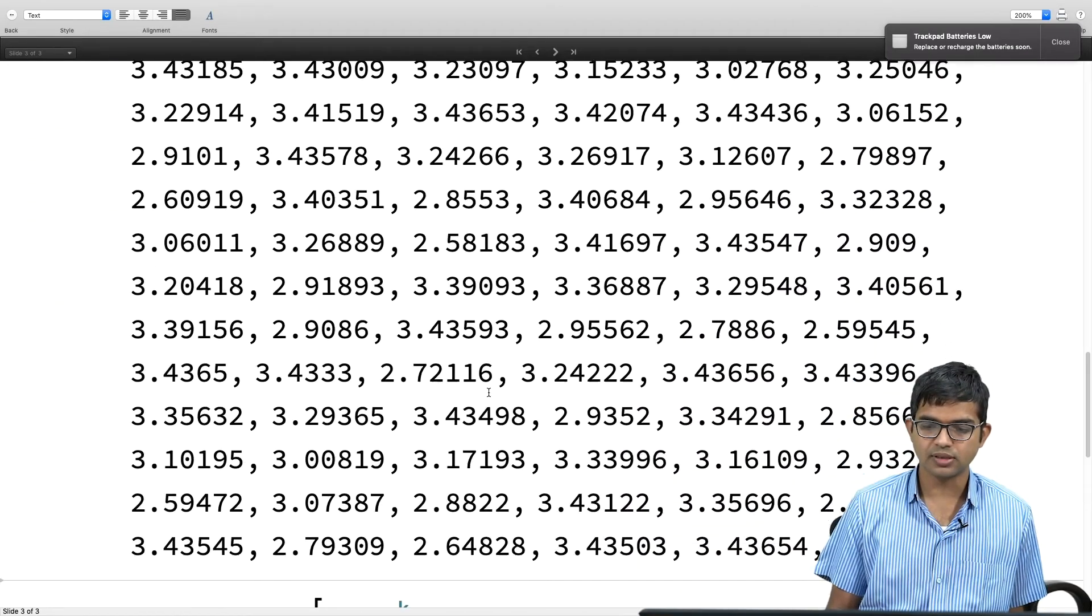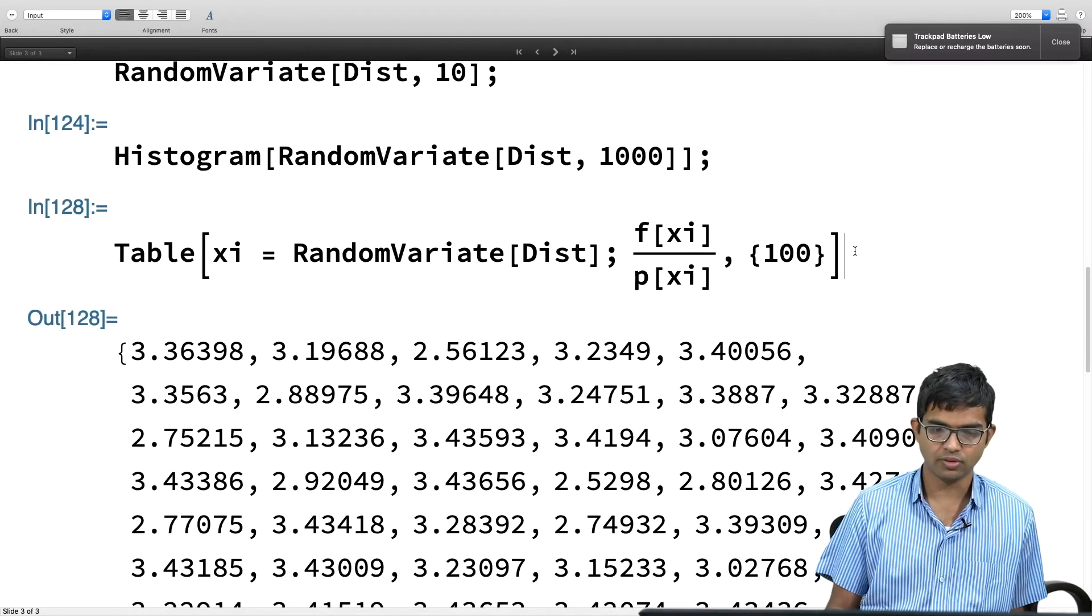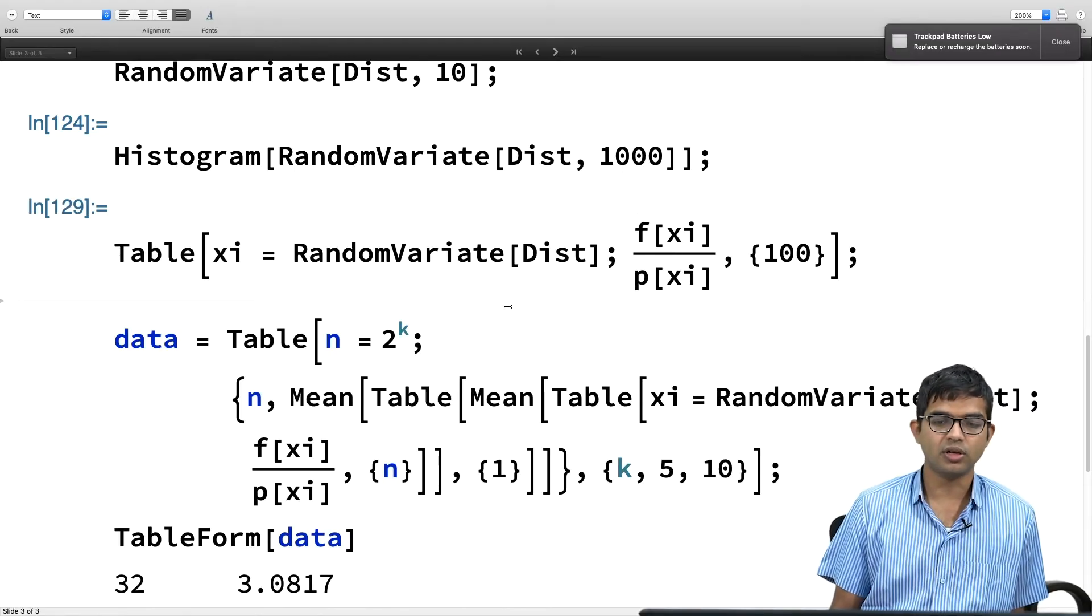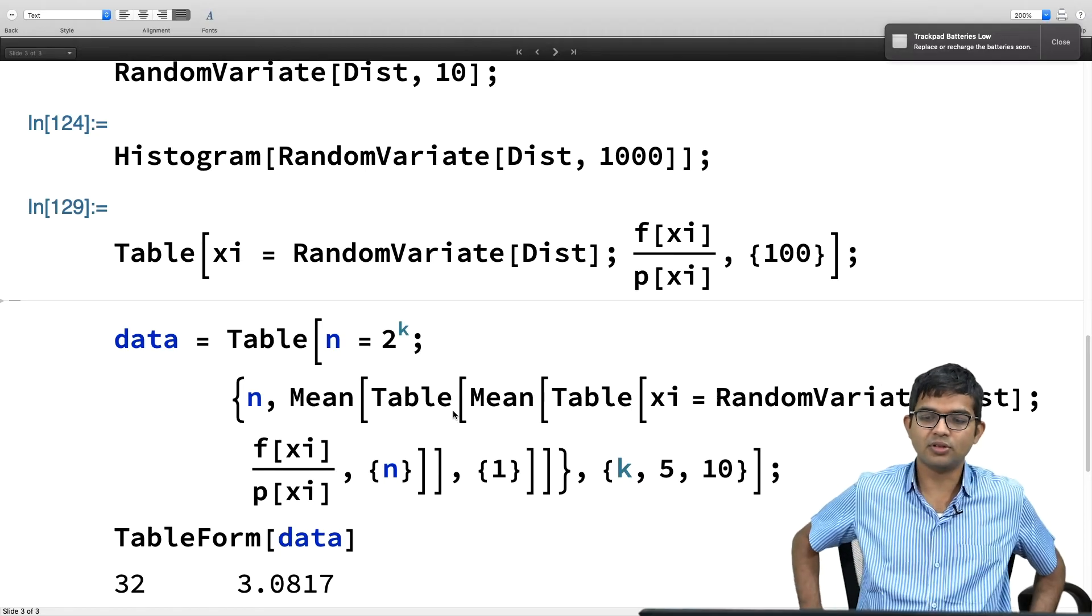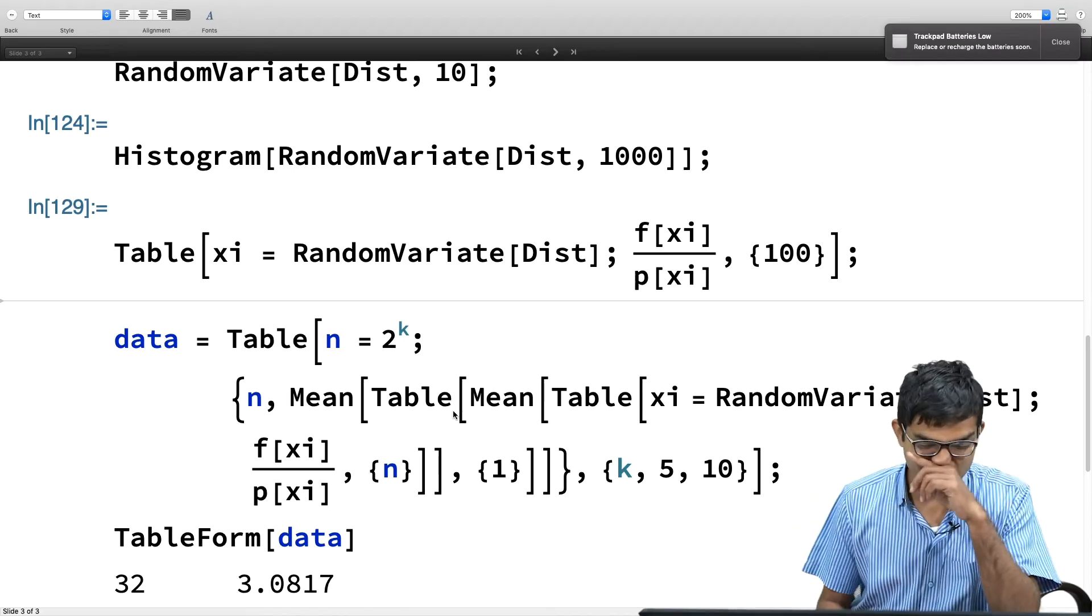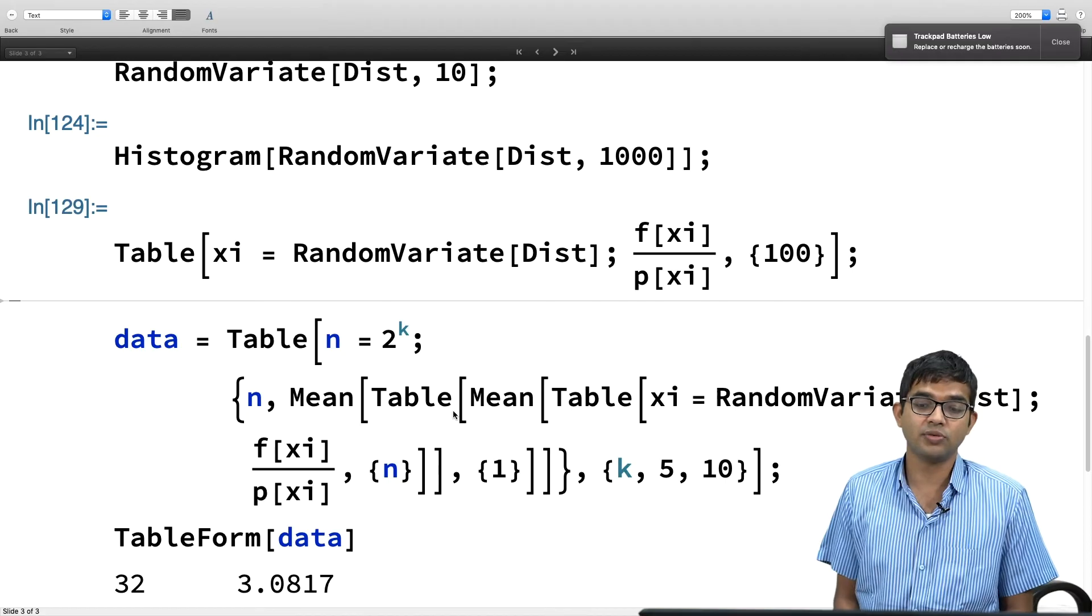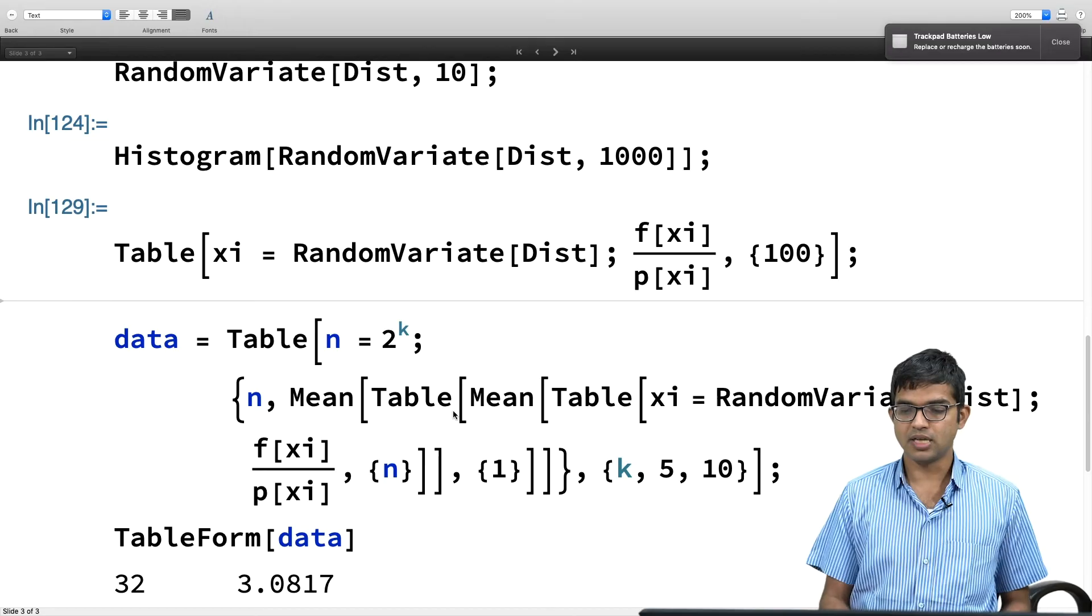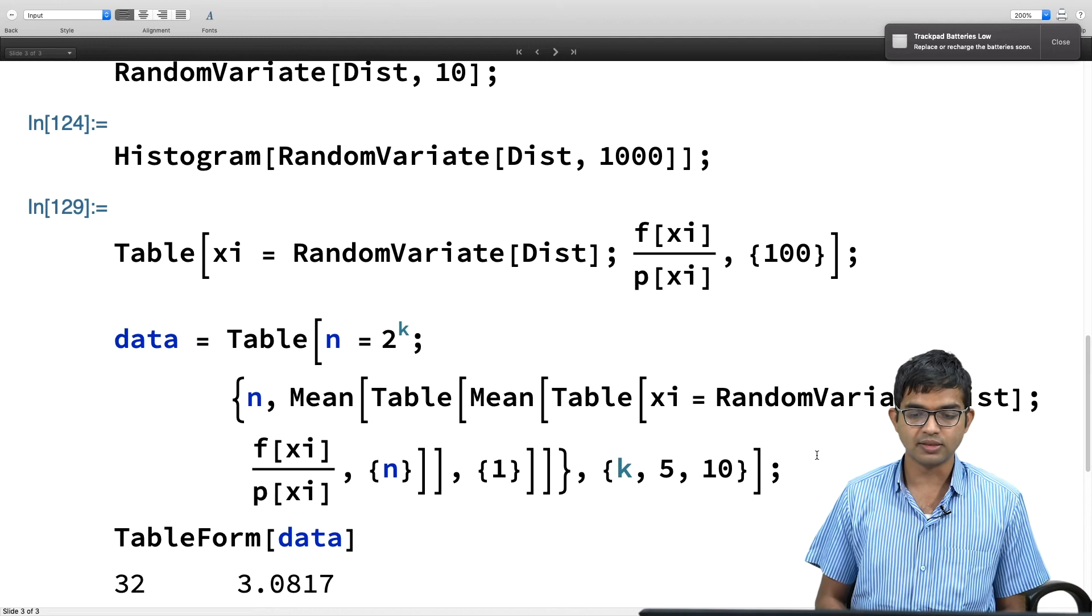And then if I do it 100 times, that is what this does. So let me actually do it here, 100 comma 100. Let me do 10. So you see there are 10 different numbers it is giving you. If I do it again, well, I mean you have to really have lot more samples and the best way to check that it is giving you something reasonable is to do a histogram.